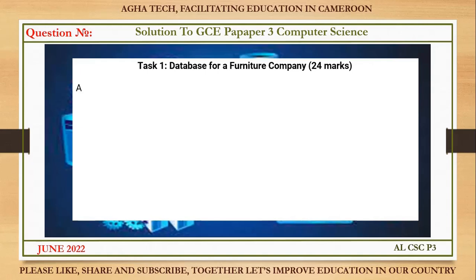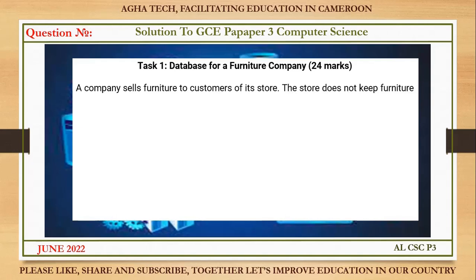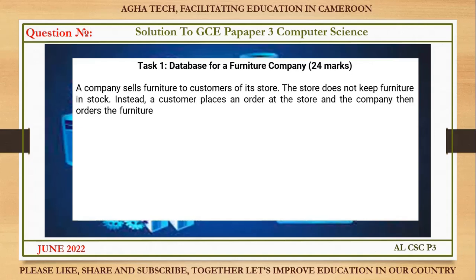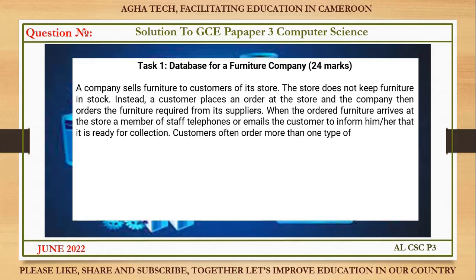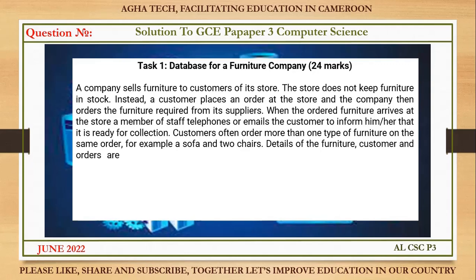A company sells furniture to customers at its store. The store does not keep furniture in stock. Instead, a customer places an order at the store and the company then orders the furniture from its supplier. When the ordered furniture arrives, a staff member telephones or emails the customer to inform them it is ready for collection. Customers often order more than one type of furniture on the same order, for example a sofa and two chairs.